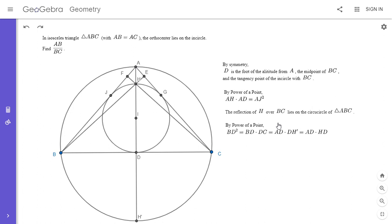And now what I'm going to do is I'm going to combine these two equations by adding them. So when I do that, I'm going to add the right side of this equation with the left side of this equation. So AJ squared plus BD squared. That's equal to AH times AD plus AD times HD. And then we can factor out the AD. So this is AD times AH plus HD. And that's just AD squared.